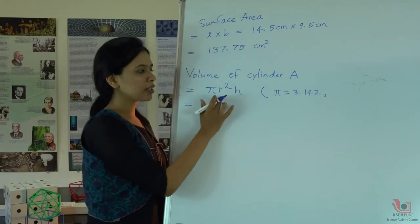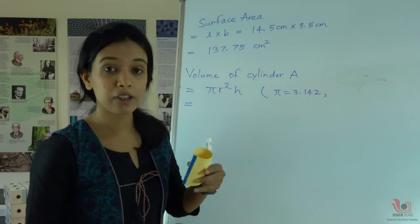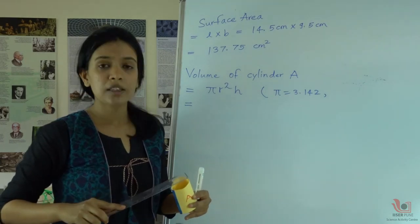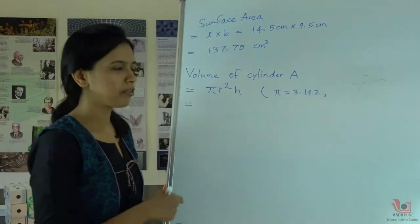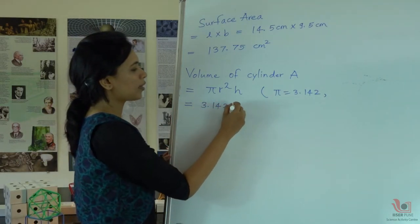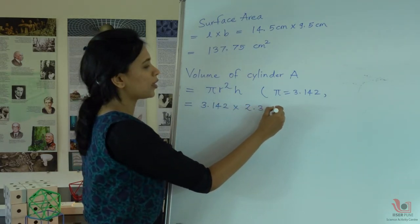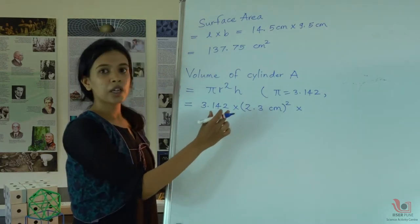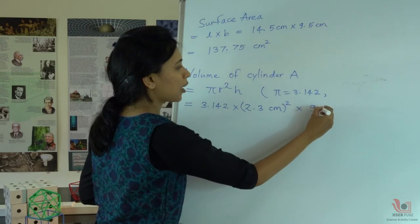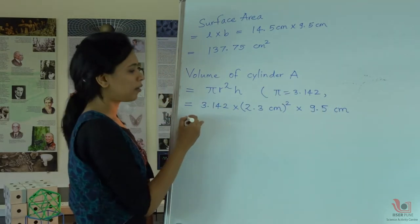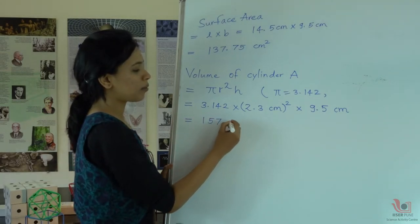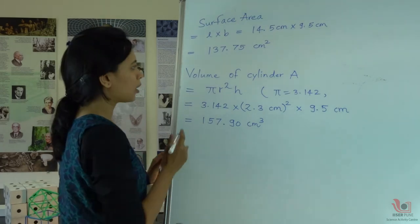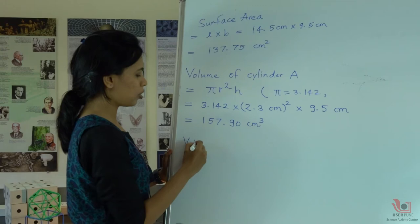To find the volume of cylinder A, we first need to find the radius. Measuring cylinder A, the diameter is 4.6 cm, so the radius is half of that: 2.3 cm. Squaring the radius gives 2.3², and the height of the fat cylinder is 9.5 cm. Using π r² h: 3.142 × (2.3)² × 9.5 = 157.90 cm³. This is the volume of the fat and short cylinder A.